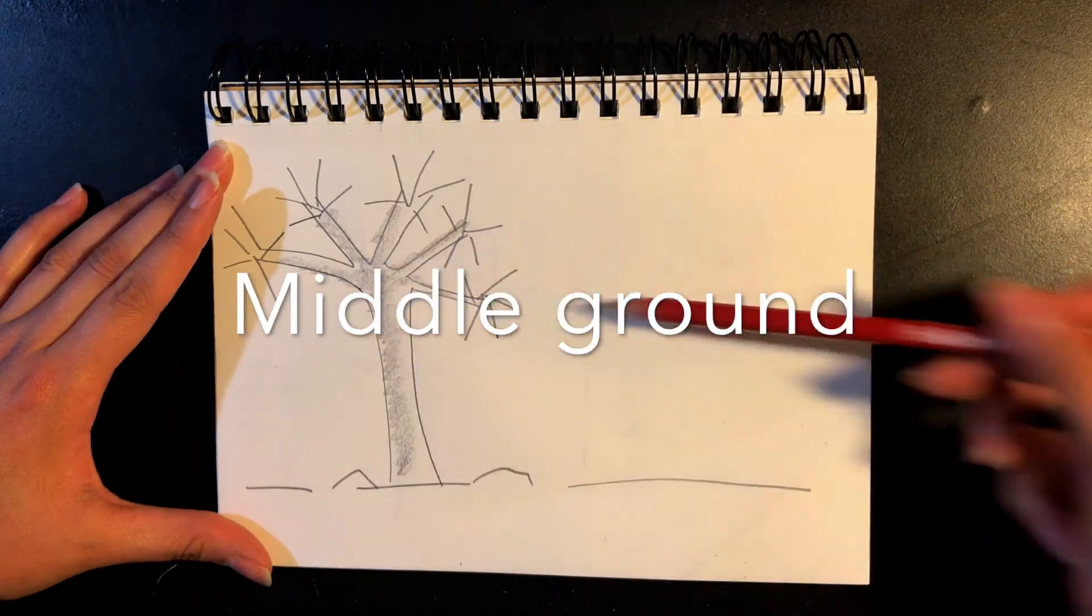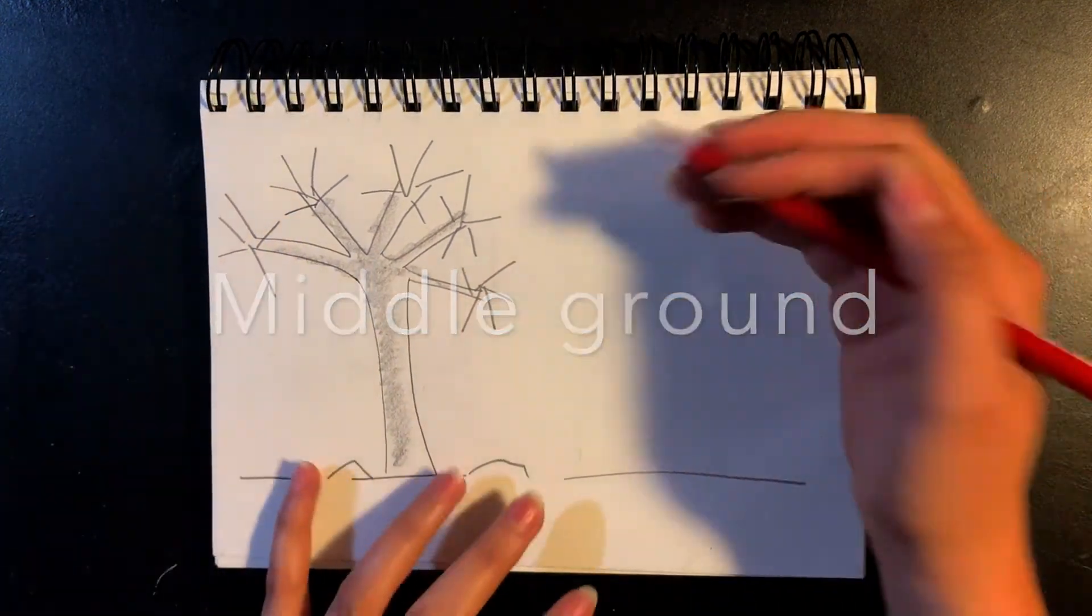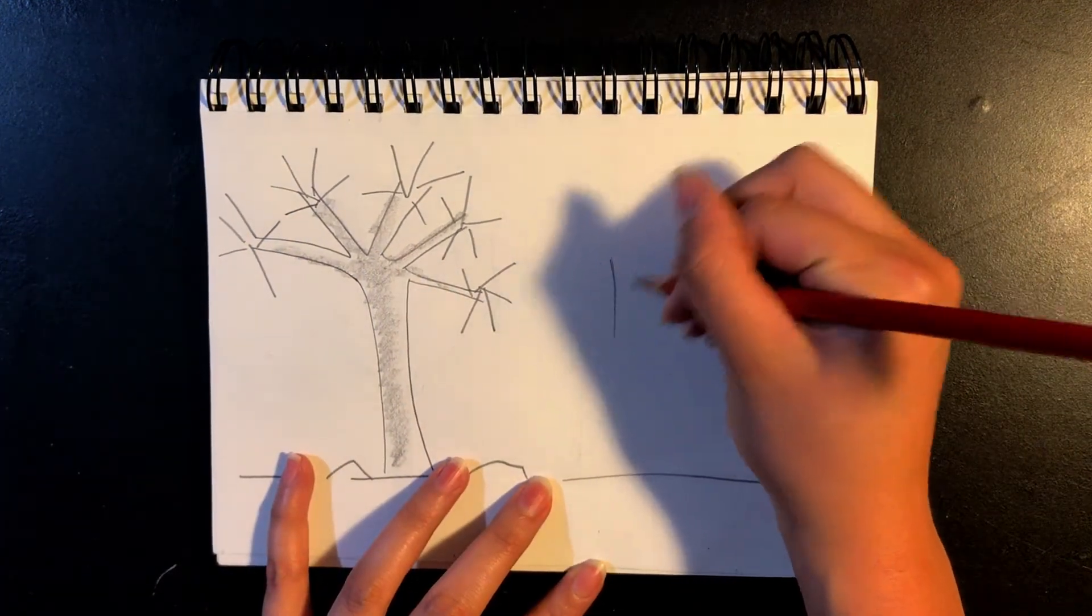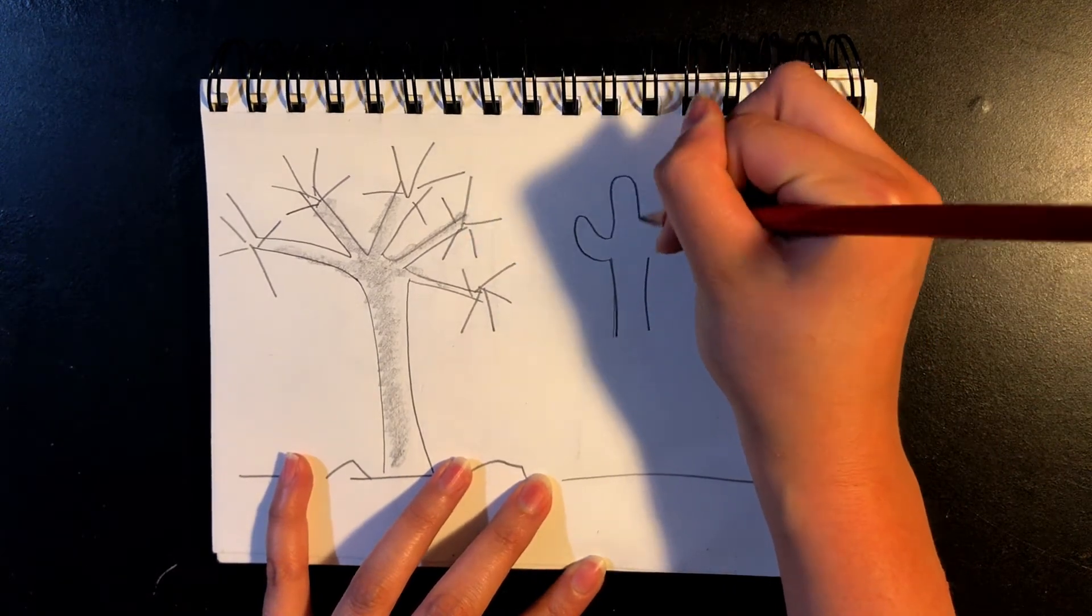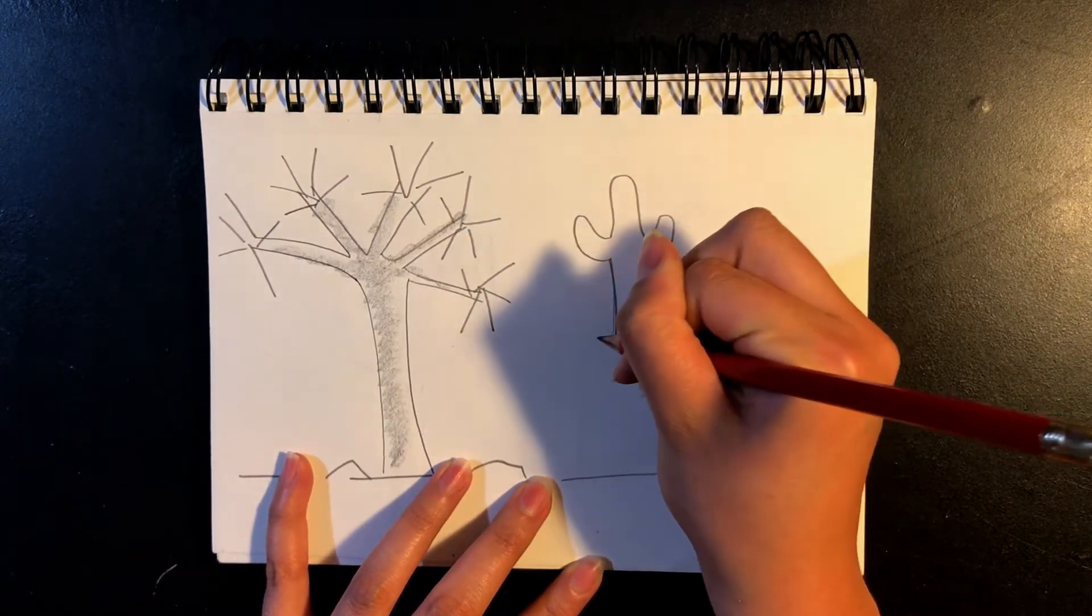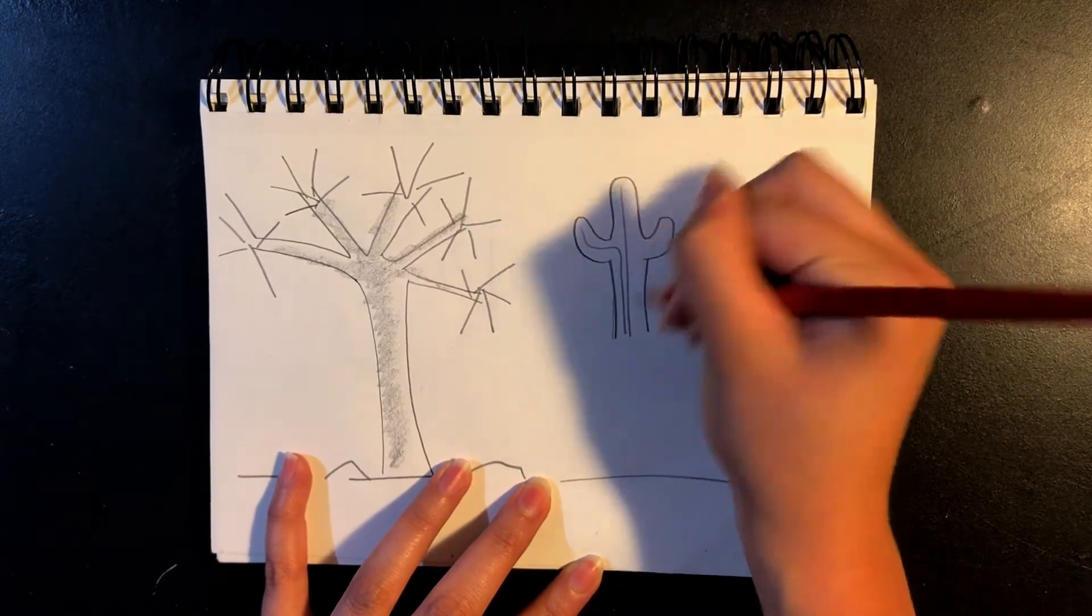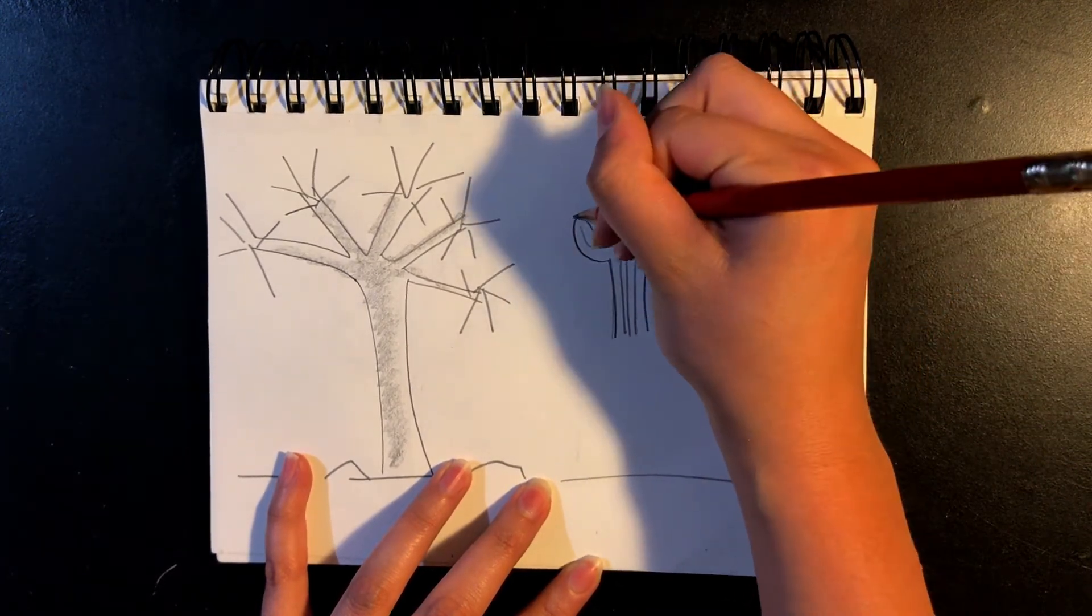Next, my middle ground. In my middle ground, that's where my viewer's eye is going to go. So when I think of a desert, I think of a cactus. So I'm going to draw my cactus, and you don't need as much detail, but that's your choice.